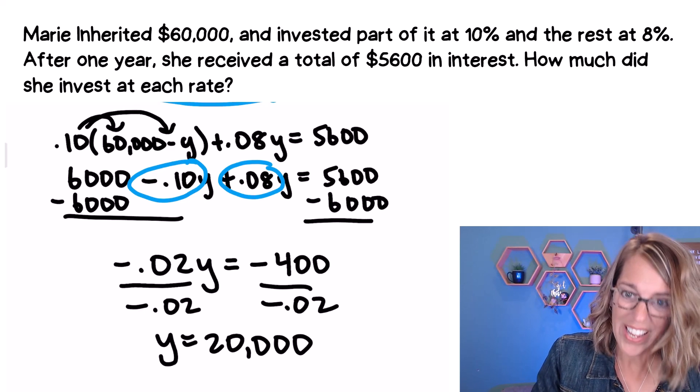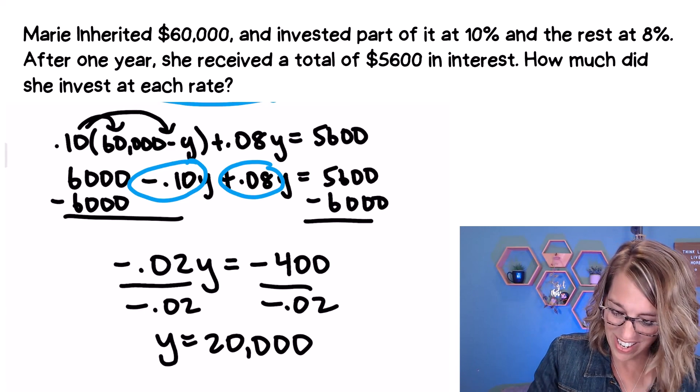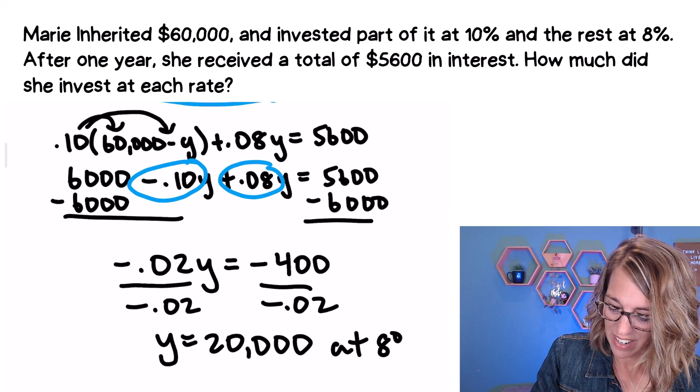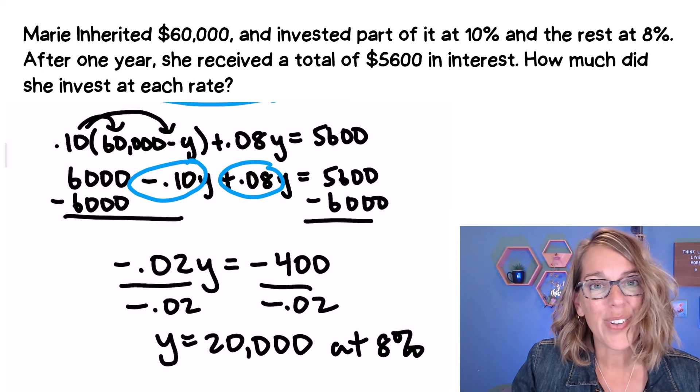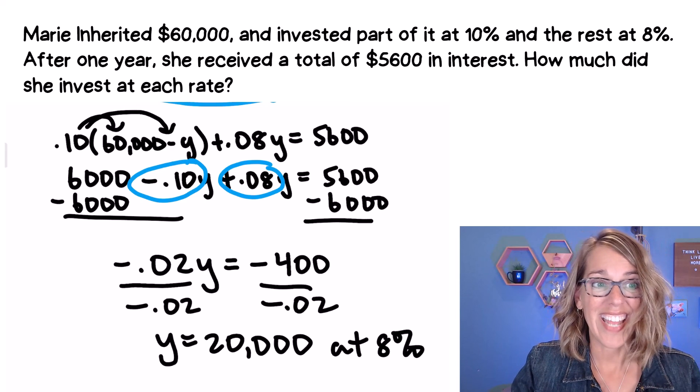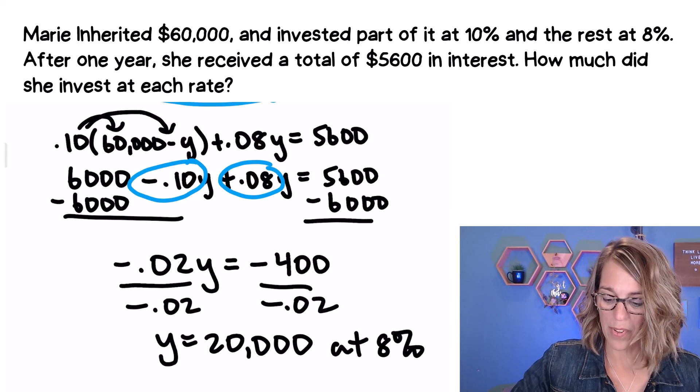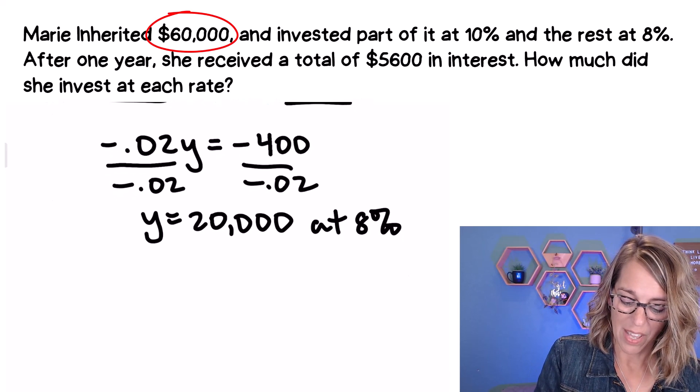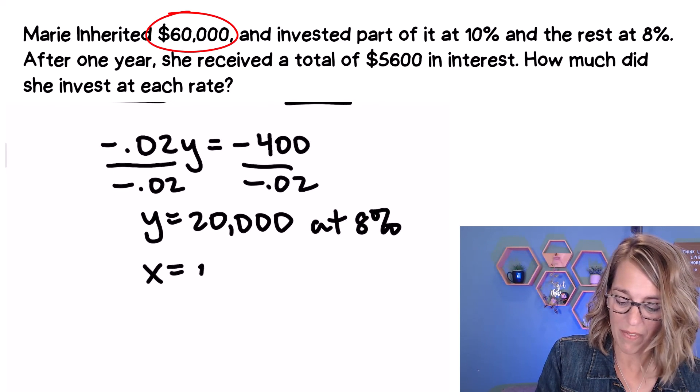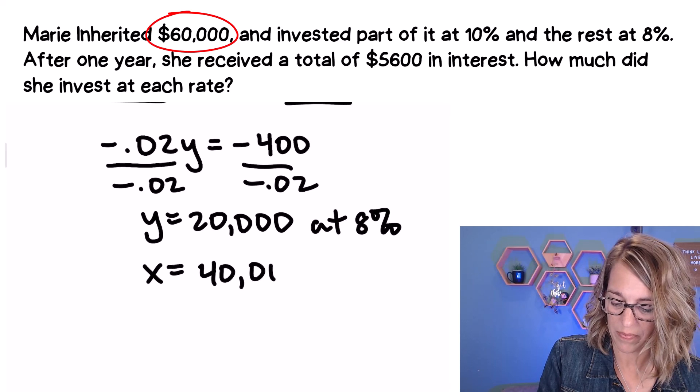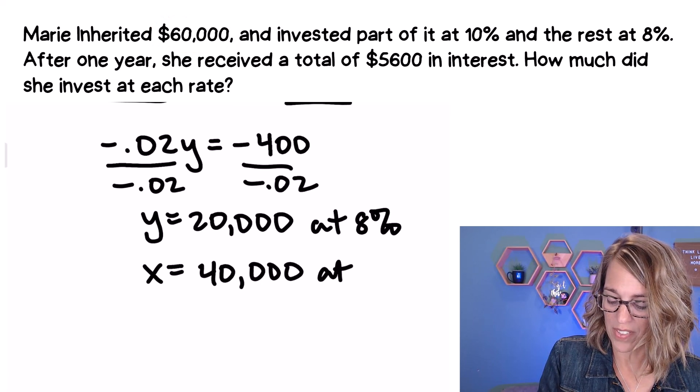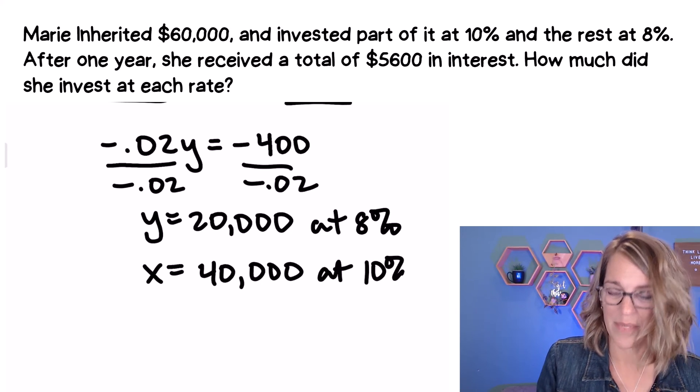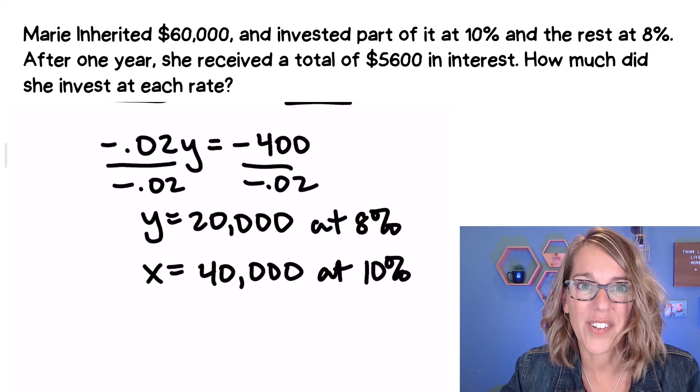My Y account was that at 8%. I also need the amount invested at 10% interest. Well, remember that we had 60,000 total. So that means that X has got to be 40,000. And that's going to be 40,000 at 10%.